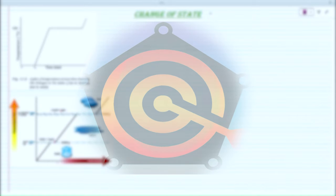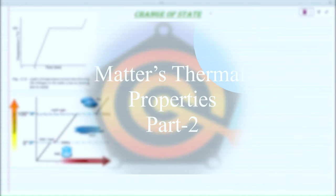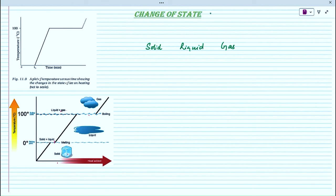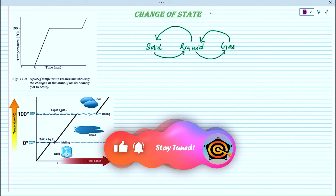Our next topic is about change of state. We have three states of matter: solid, liquid, and gas. We are going to convert solid into liquid and liquid into gas, and vice versa — gas into liquid and liquid into solid.